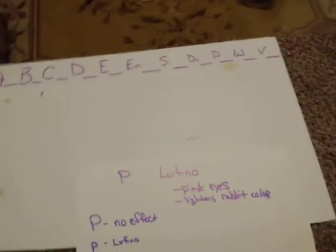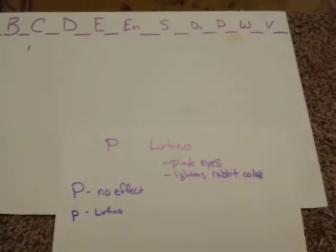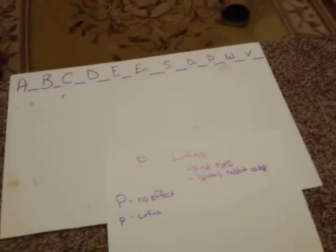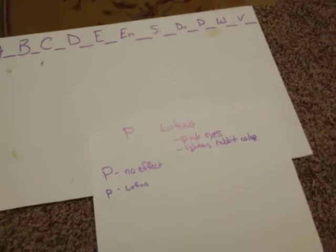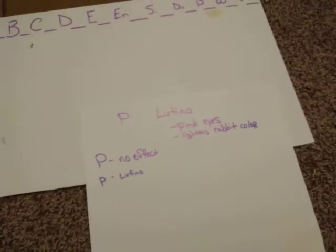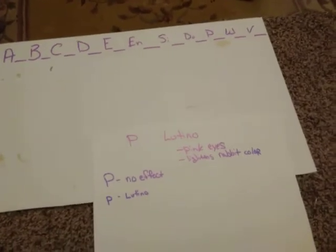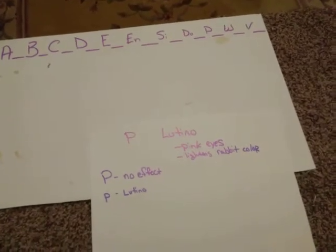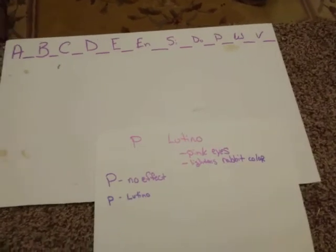The reason it's labeled P is because it creates what we call pink colored eyes. Pink colored eyes are a result of what we call Lutino.